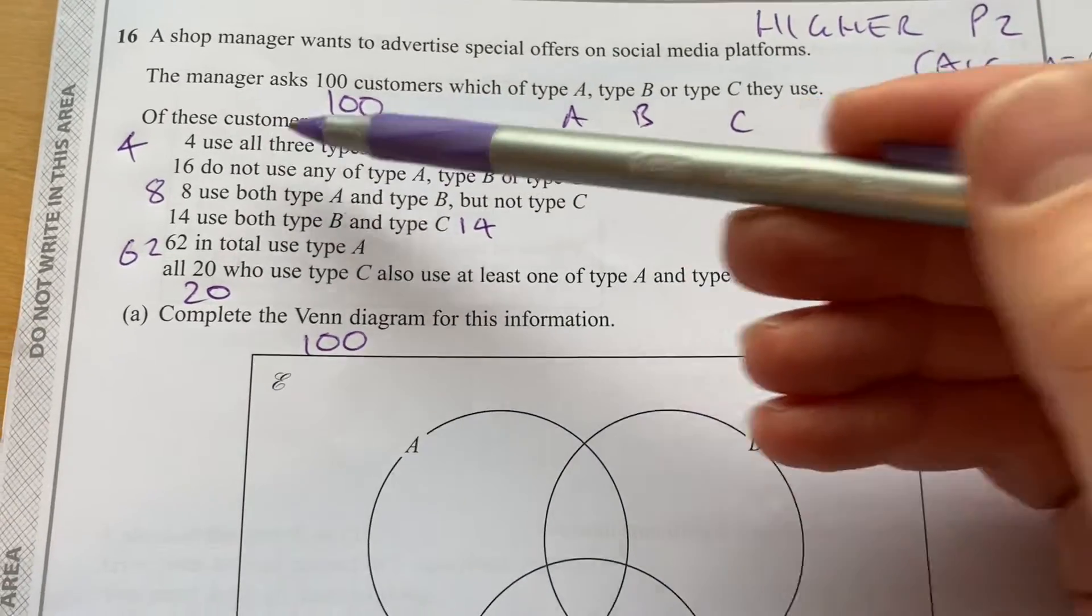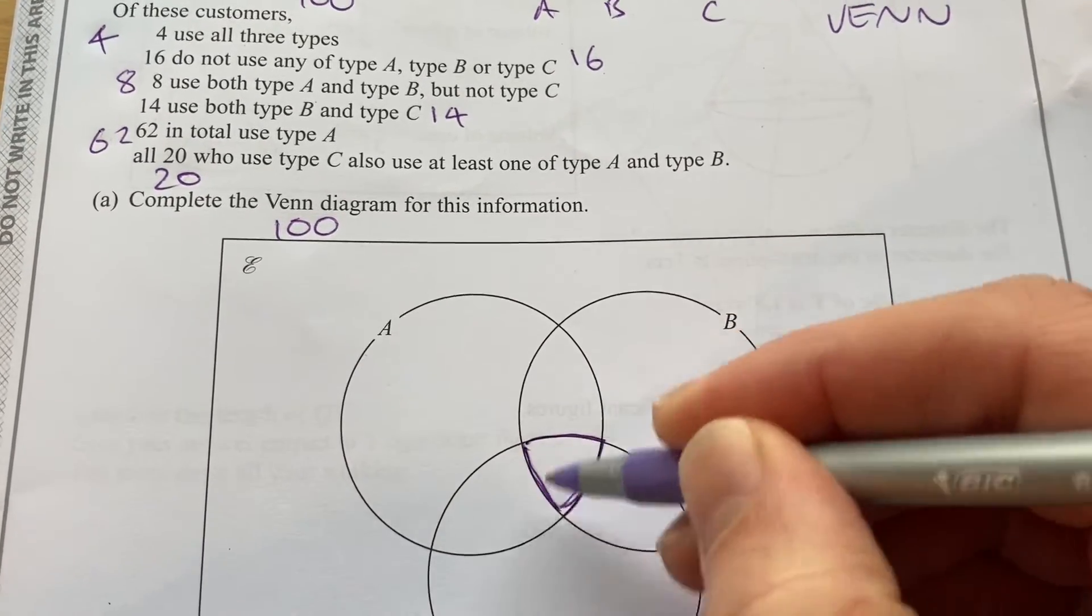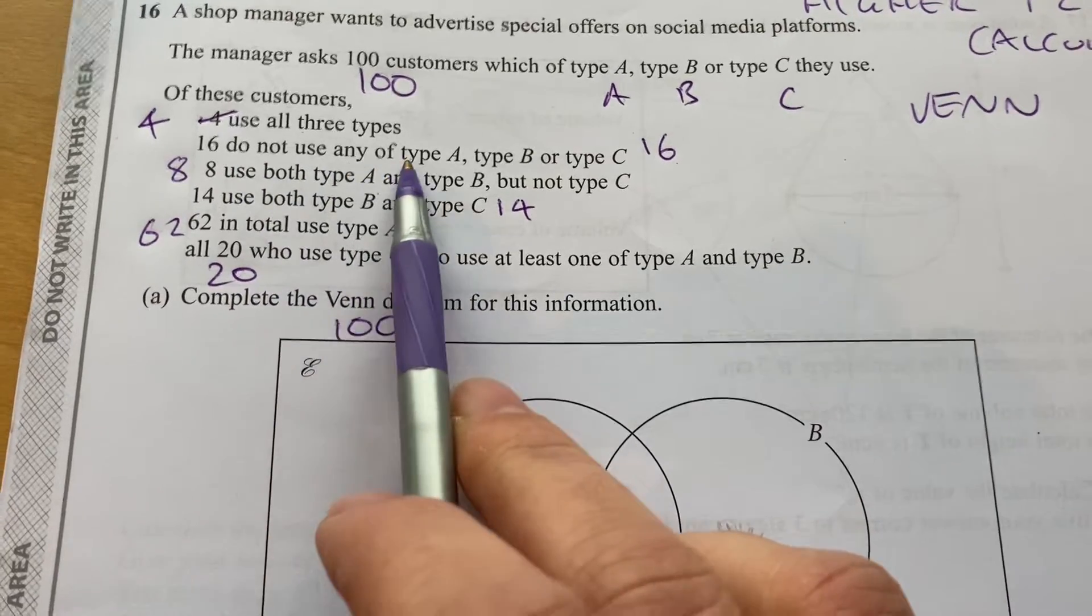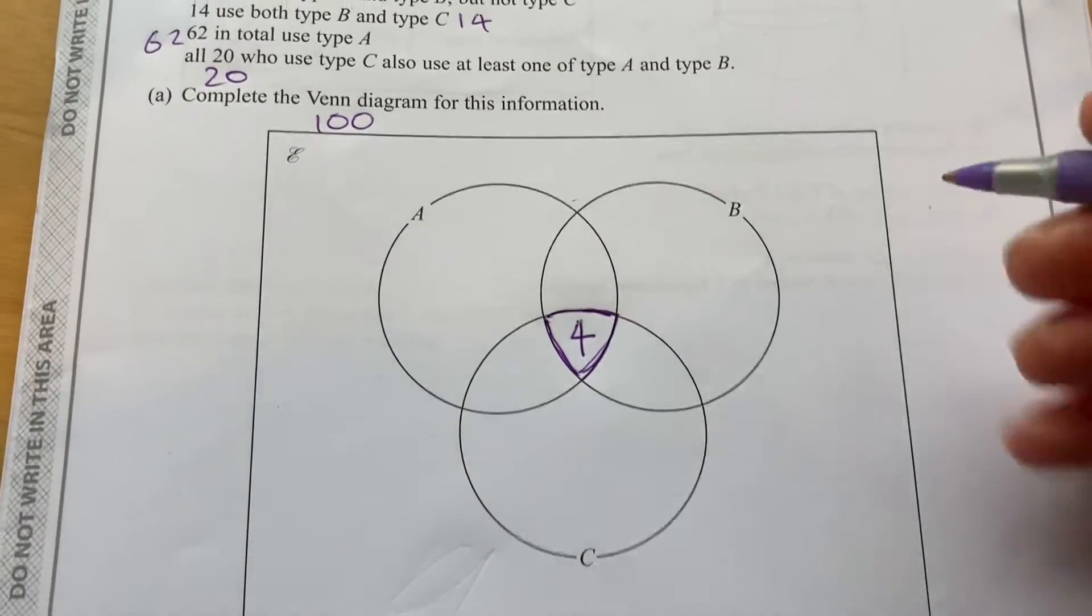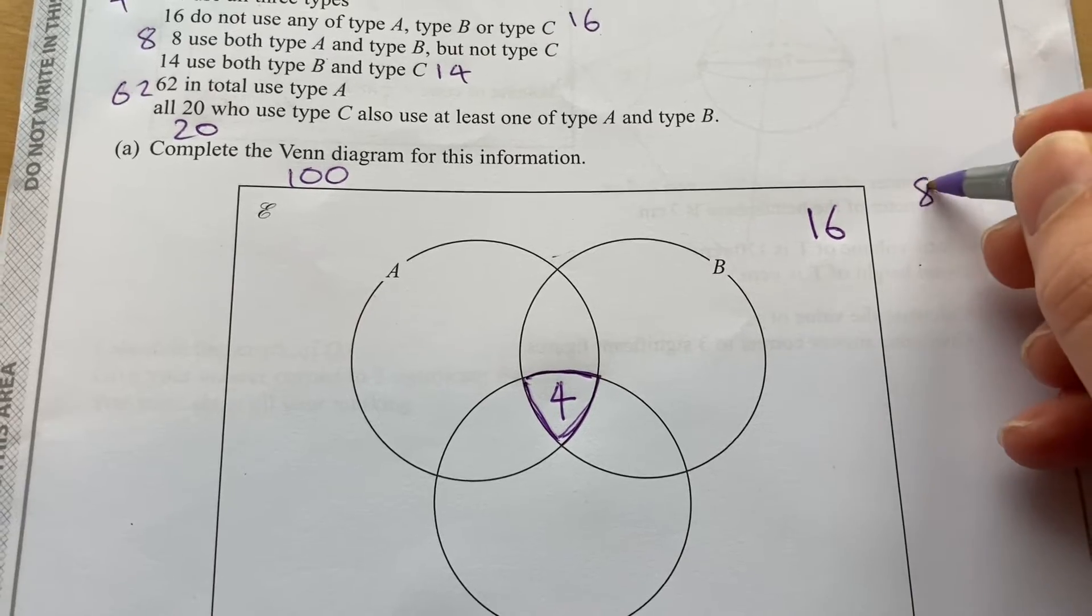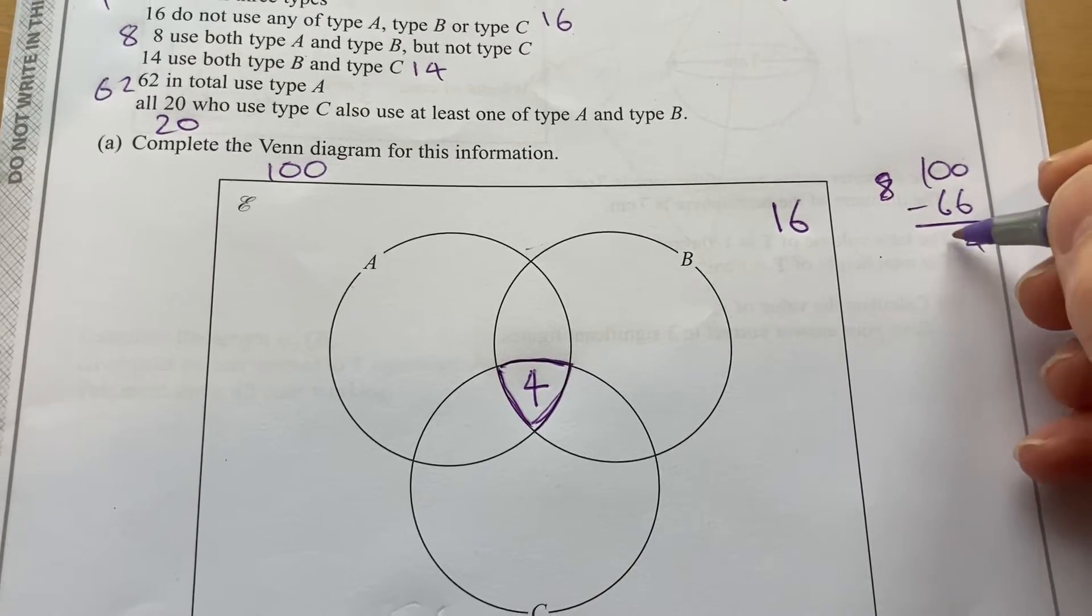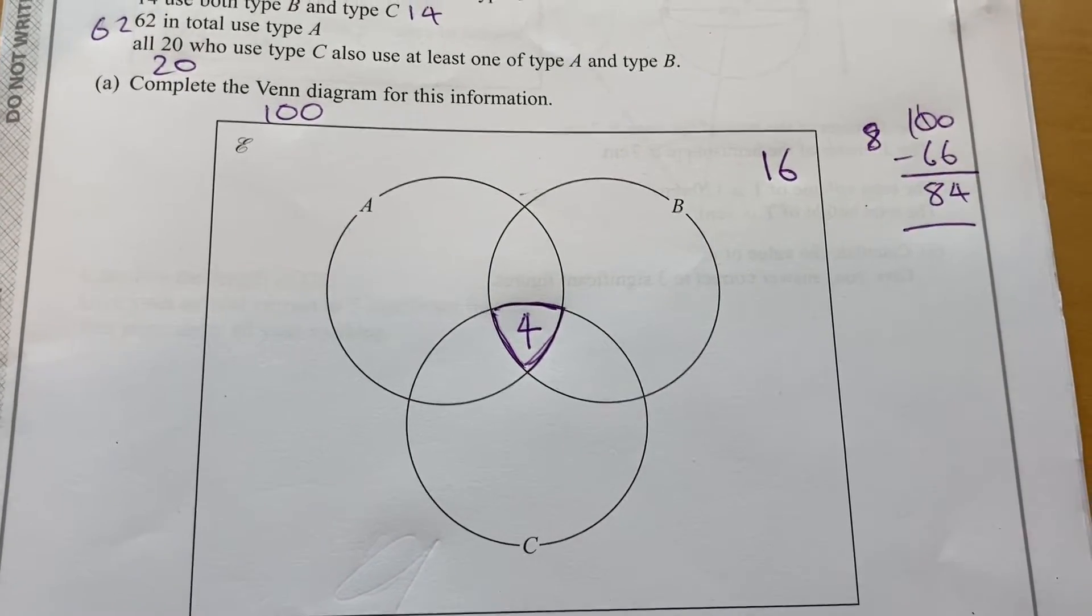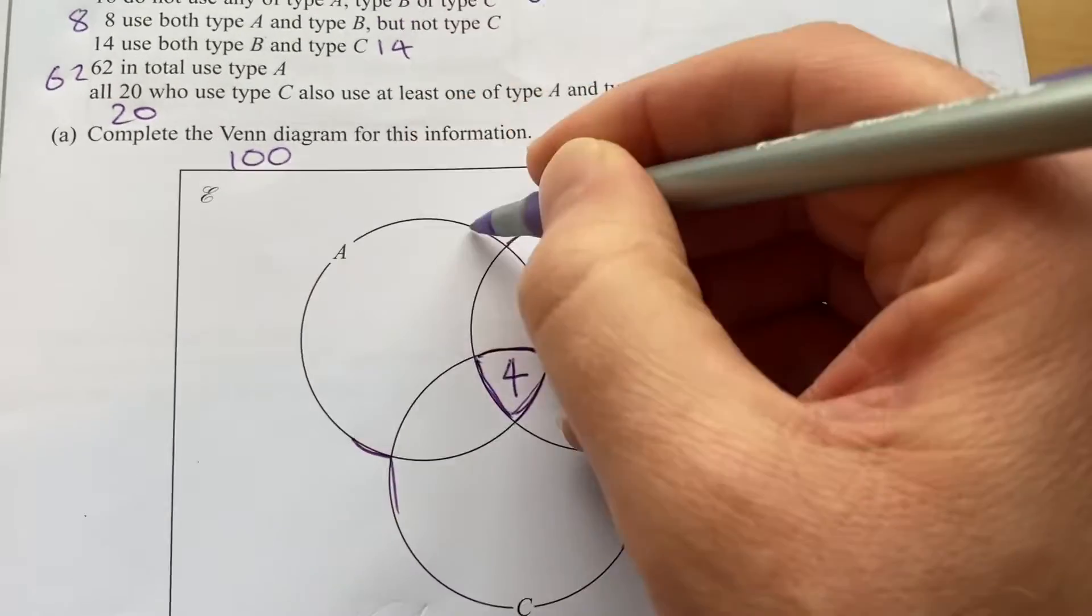Let's go from the first one. 4 use all three types, so the overlap of all three is this section here, because it's in A, it's in B, and it's in C. So that's going to be 4. That's the first thing that we can put down.